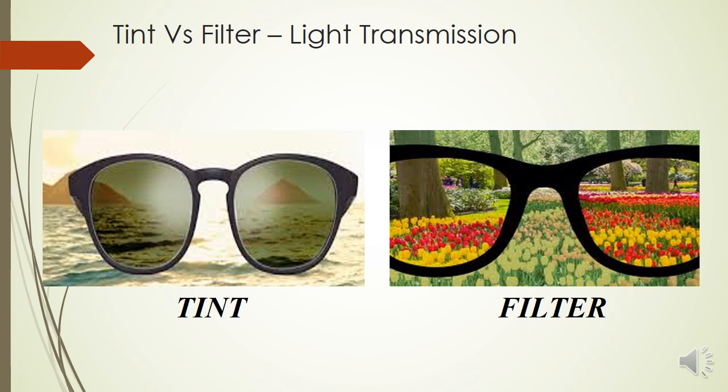In a filter, it filters out a particular spectrum of light. For example, a yellow filter absorbs UV light and shorter wavelengths, and allows the yellow spectrum — the longer wavelengths — to pass through, giving enhanced vision and better contrast clarity. A filter does not reduce the total amount of light transmitted; rather it allows a particular wavelength to pass through.